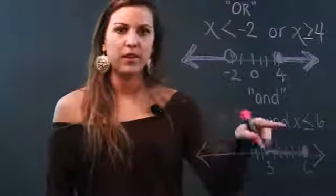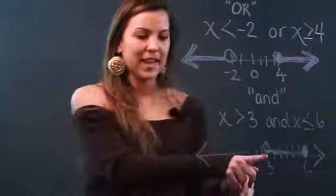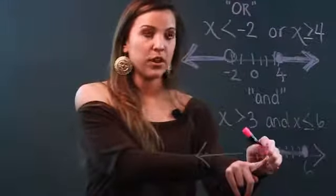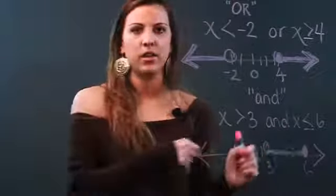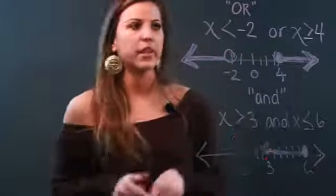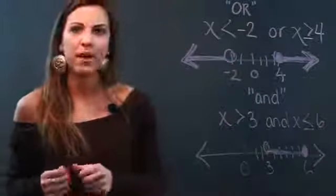This shows me that X can be greater than 3 and it has to be less than or equal to 6. So AND inequalities will graph as an intersection, OR inequalities will graph going in opposite directions, and that's how you graph compound inequalities.